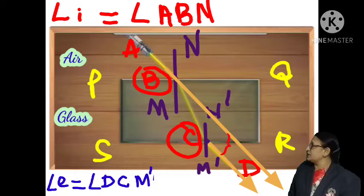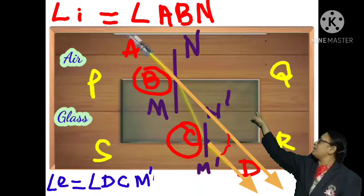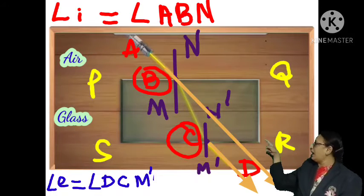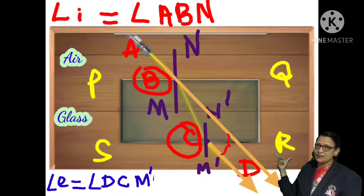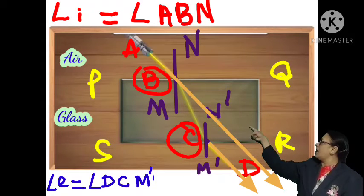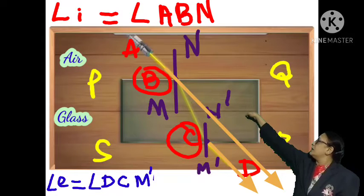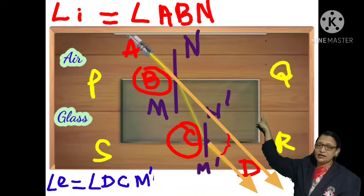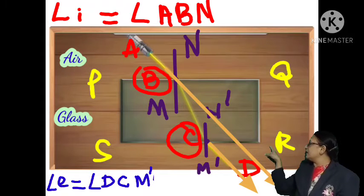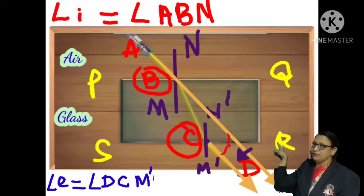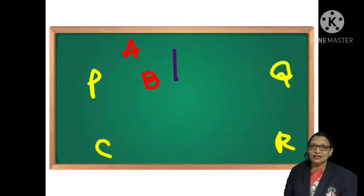The direction of both light rays is the same. However, the emergent light ray CD is laterally displaced from the path of incident ray AB. This lateral displacement is the key difference. This is how light travels through a rectangular glass slab.